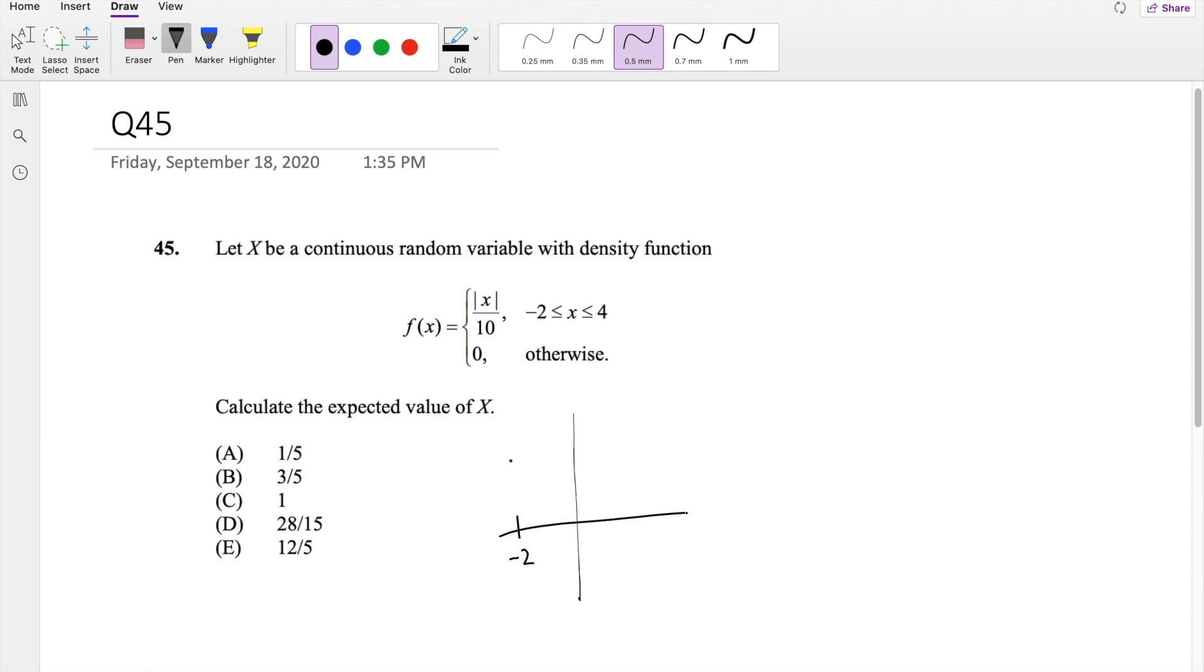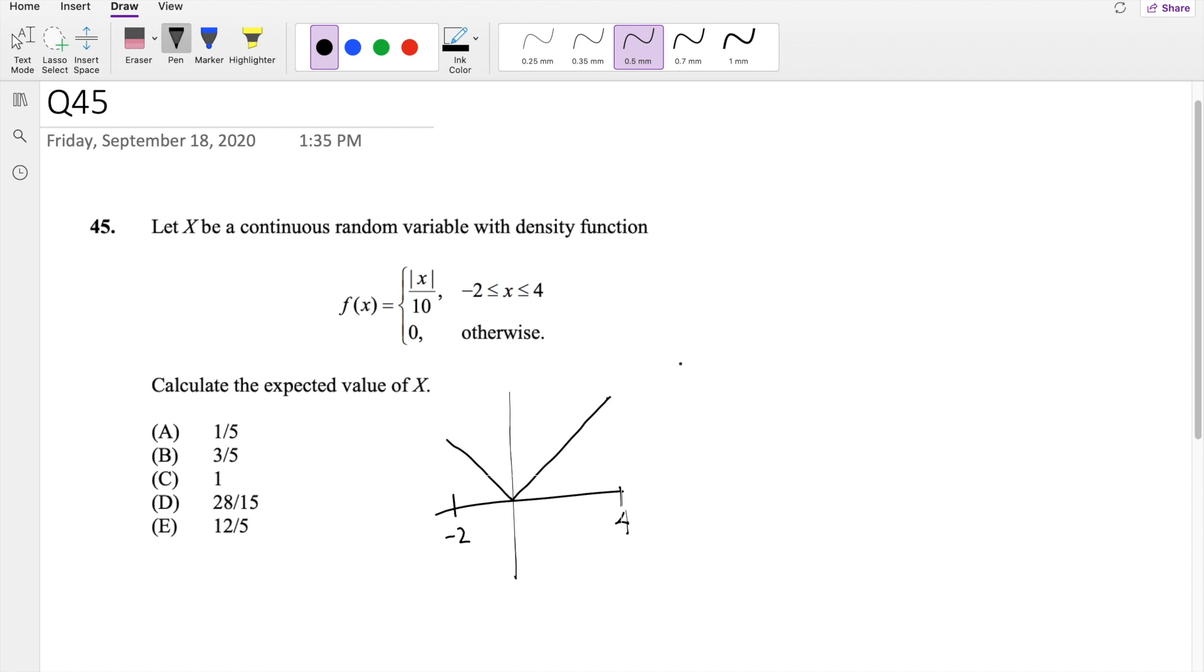it's going to actually be a little downward sloping. And from 0 to 4, it's also going to be upward sloping like this. This one actually has two ways to solve this, but I'm going to do the probability distribution way.